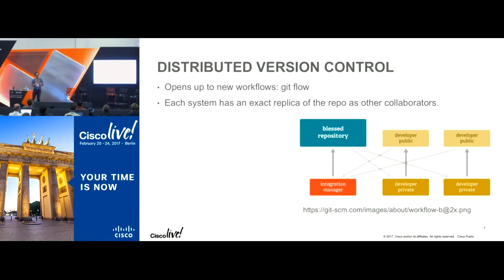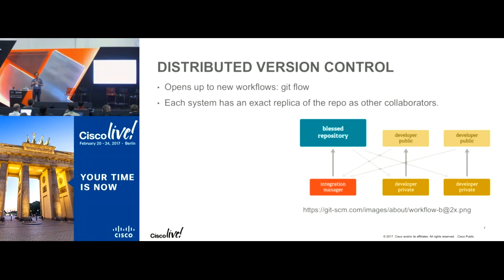There are different types of version control. There's centralized version control, and then there's distributed version control. Distributed version control enables you to download an entire copy of the repository onto your workstation, look at all the logs, get all the files, work with it, and then contribute it back to a main repository. This is a workflow common for development teams, and infrastructure teams may adopt this same pattern — work on your local copy, submit it to a public place where someone can review it, and then an integration manager blesses it and puts it into the real repository.